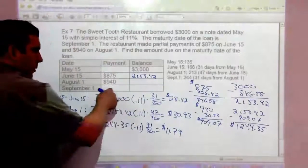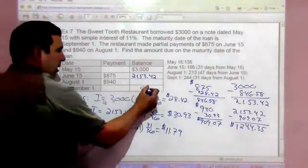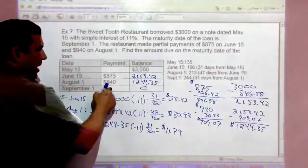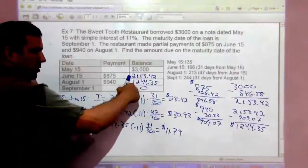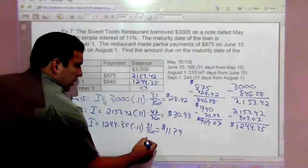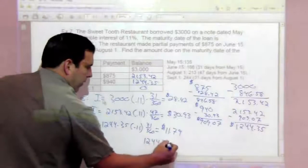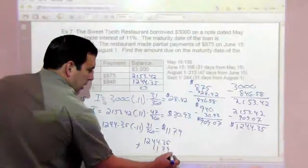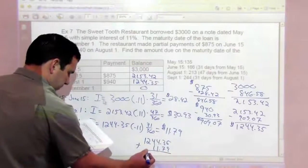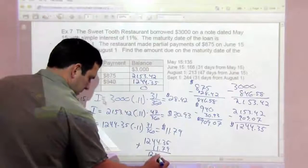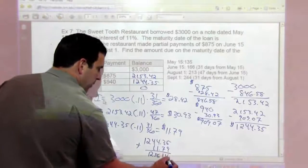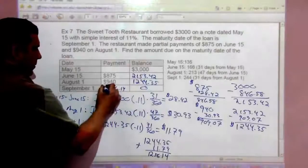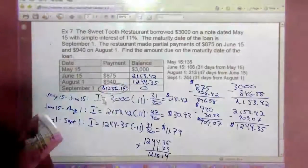But now after subtracting it, we don't know what the final payment is going to be. We know the final balance should be $0. What's that last payment? It has to be this amount plus any interest that's accrued. So $1,244.35 plus $11.79 is $1,256.14. That's the final payment.